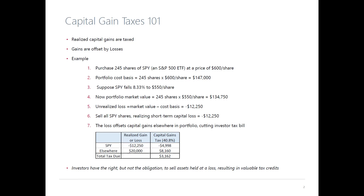For folks who don't know what tax-loss harvesting is — capital gains taxes are the reason why it matters. Taxable investors in the U.S. are subject to capital gains taxes. If they make an investment in an asset and the price goes up, that's an unrealized gain. If they then sell the asset for a profit, that's a realized gain, and they have to pay a tax on it. There's a short-term tax — roughly 40% — and a long-term tax, which is less.